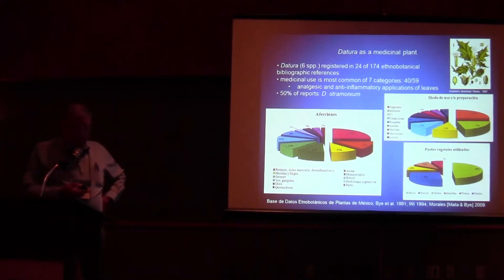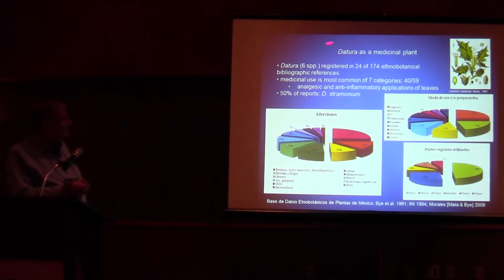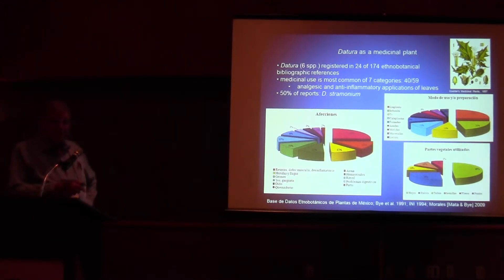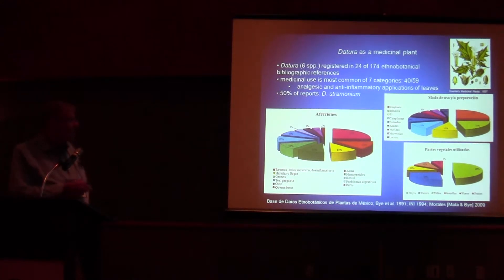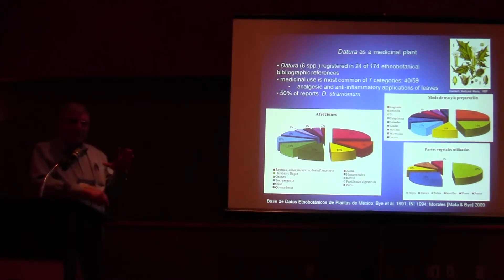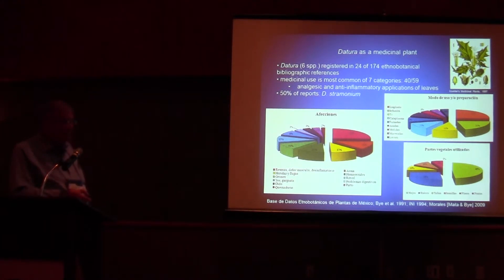In terms of use of Datura in Mexico, we have 13 species, of which six are registered in a survey of almost 200 references. We find 24 specifically talking about the use of Datura over time. Most of the common uses deal with medicinal aspects, with the dominant application being for analgesic and anti-inflammatory properties. About half of those reports deal with Datura stramonium, the worldwide weed today. The preparation basically involves warming up the leaf and placing it onto the area that's inflamed.